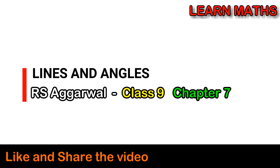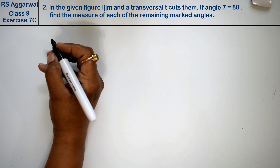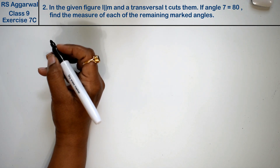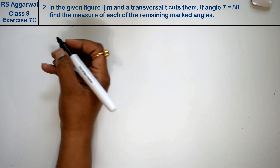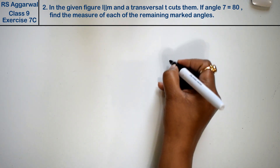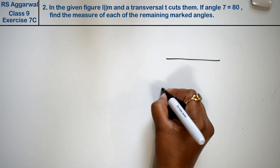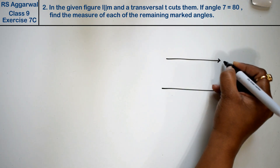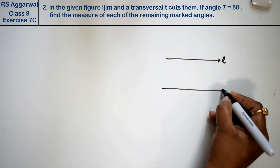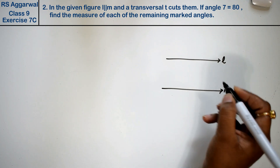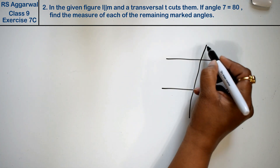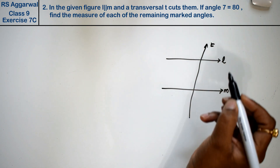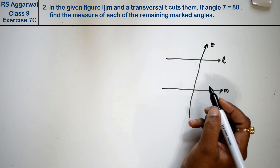Let's do question number 2 of 7C, that is lines and angles. In the given figure, L and M are parallel and the transversal T cuts them. We are making this figure where L and M are parallel and T is a transversal which cuts L and M.